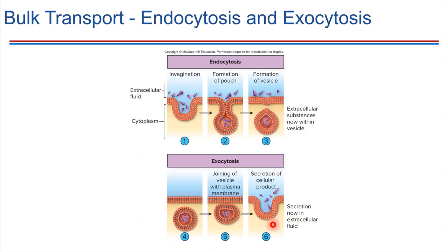In passing, we'll mention bulk transport. There's another way cells can move things — particularly when a cell wants to move more than one molecule at a time. The cell can carry out endocytosis and exocytosis, which involves the formation of vesicles or the fusion of vesicles with the plasma membrane.